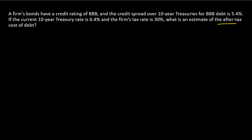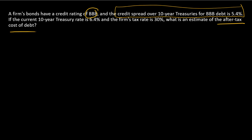Here, we're estimating a firm's after-tax cost of debt, possibly to use in a weighted average cost of capital formula. In this case, we're not given information specific to the firm's bonds, other than they have a credit rating of BBB. So to construct our estimate, we're going to use information about other BBB debt — an average yield to maturity of BBB debt in excess of treasury, which is the credit spread over 10-year treasury — as well as the current 10-year treasury rate.